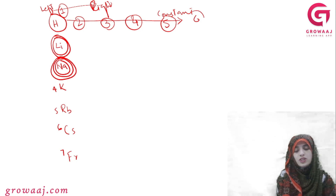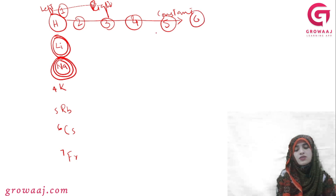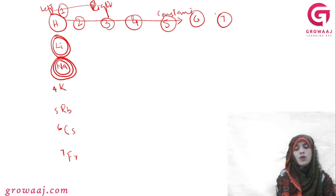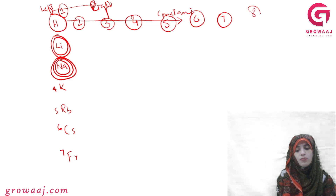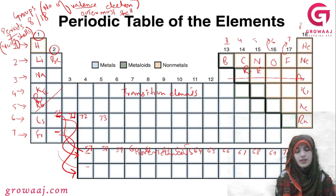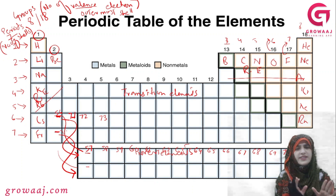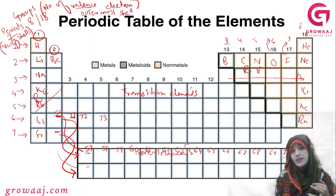The sixth period has 6 shells and the seventh period has 7 shells with advanced shells. We have 7 periods with 18 groups. We want to predict the number of valence electrons and shells.